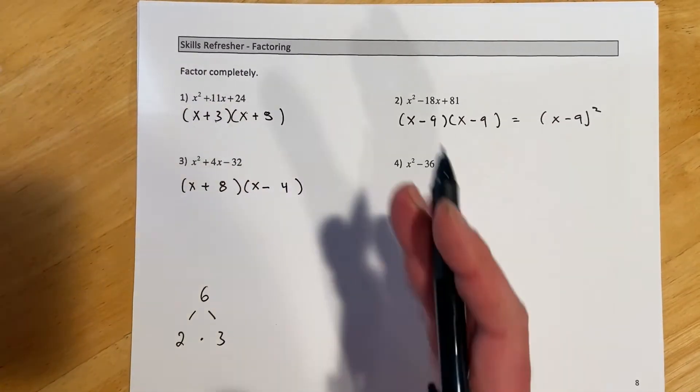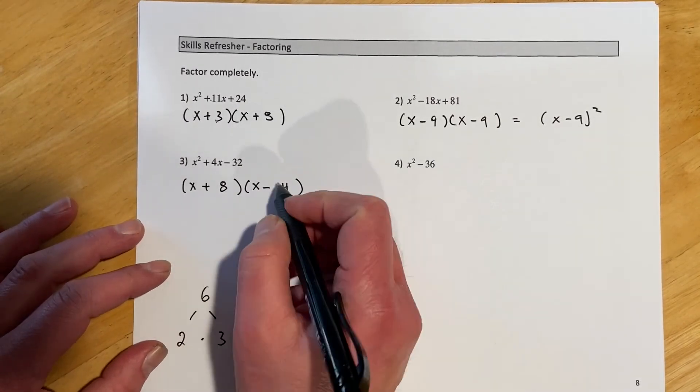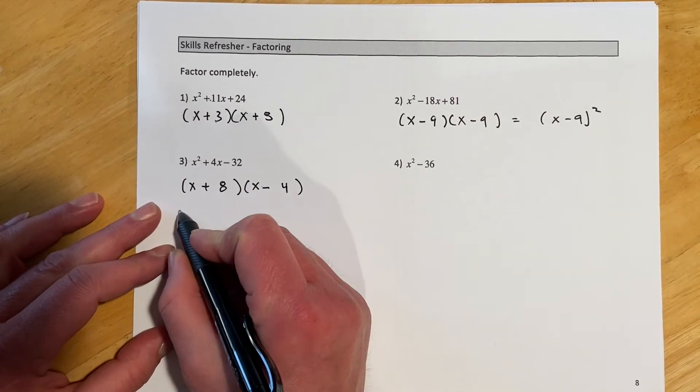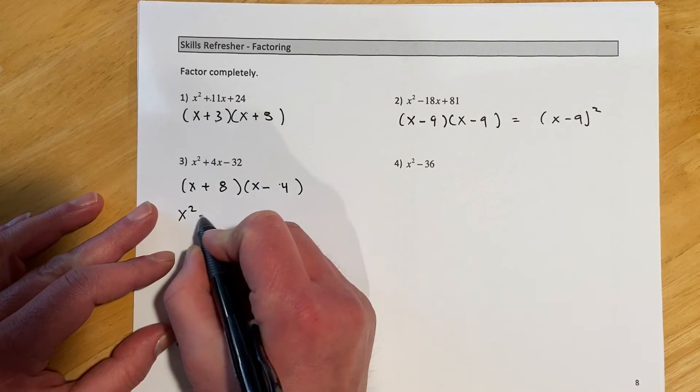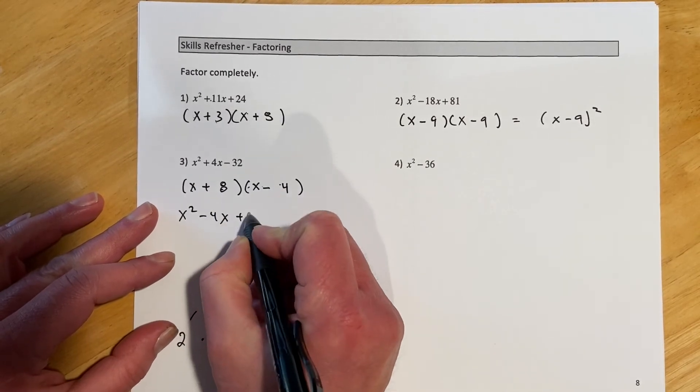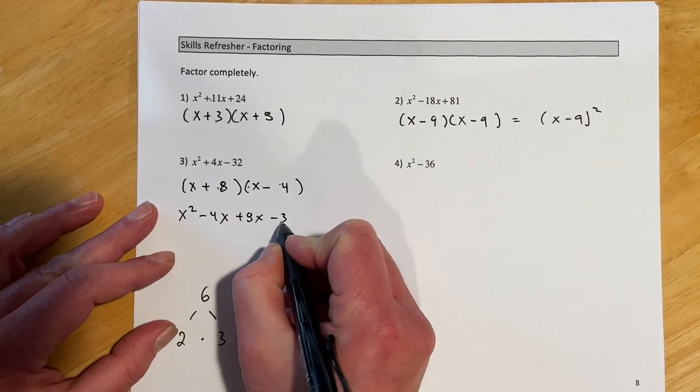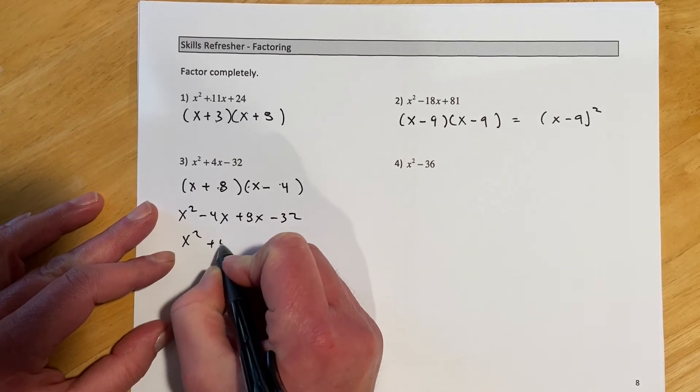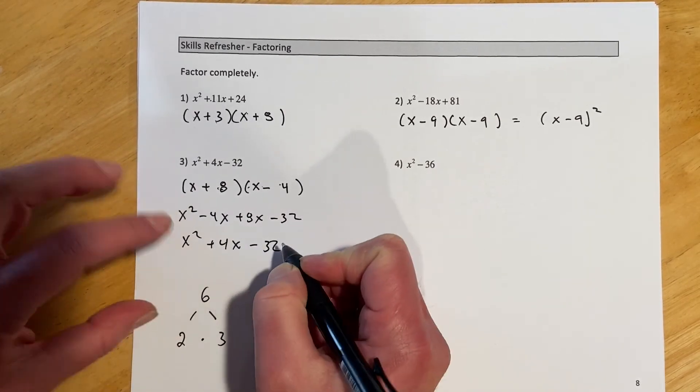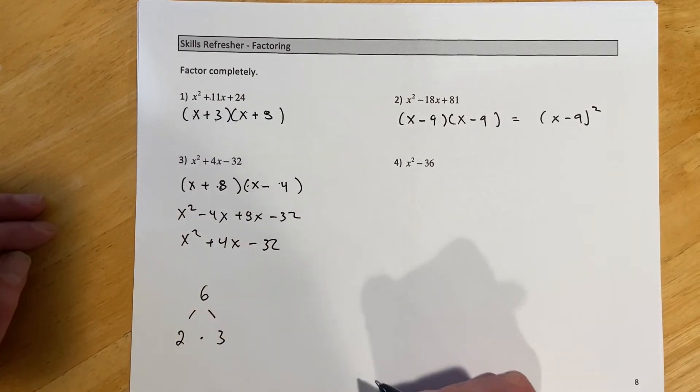And then if you're ever not sure if you did it right, factoring is super easy to check. We just FOIL it and go x squared minus 4x plus 8x minus 32, and then there's our x squared plus 4x minus 32. So very easy to check these.